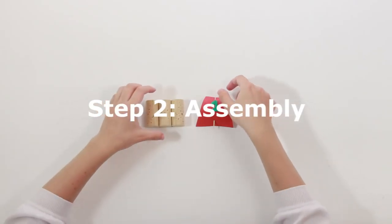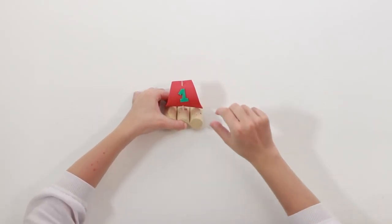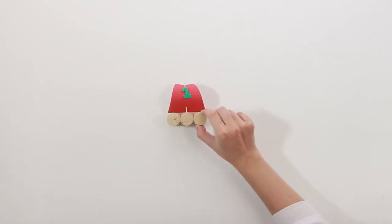For the final step, simply attach your sail to the cork base like so. And there you go. Your boat is now water ready.